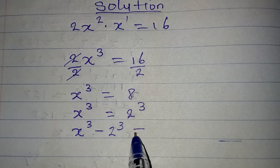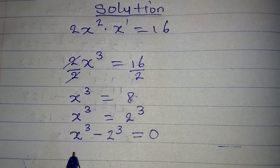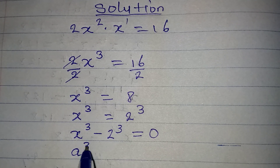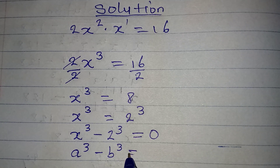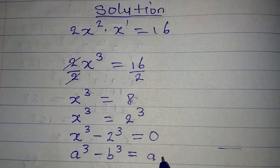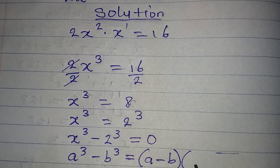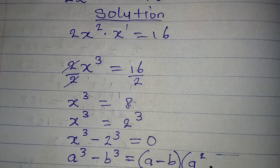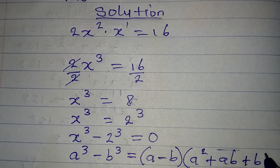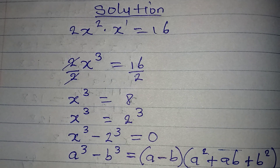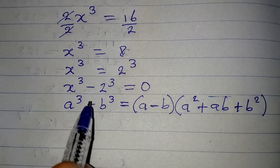So let's get the three solutions by bringing everything to the left: x³ minus 2³ equals 0. Now if you have a³ minus b³, this is the same thing as (a minus b) times, and in the other factor you have a squared plus ab plus b squared.